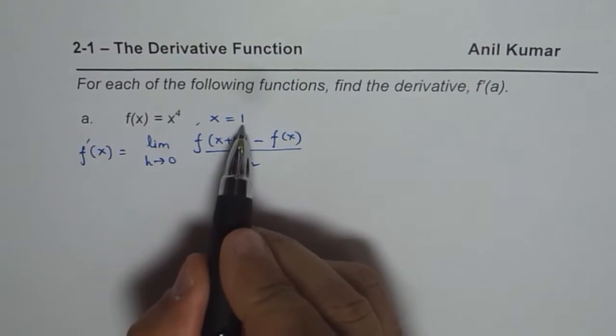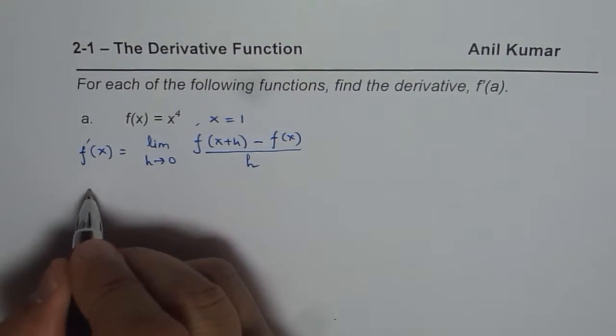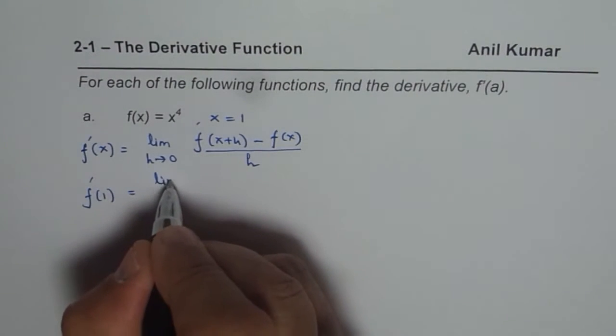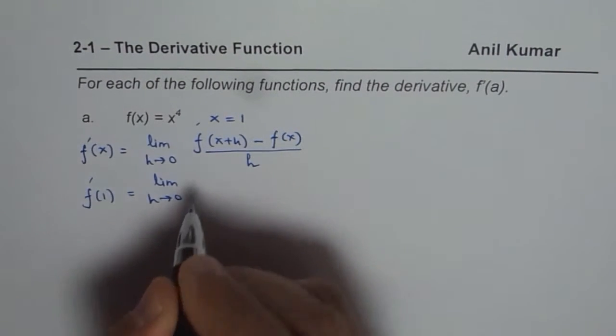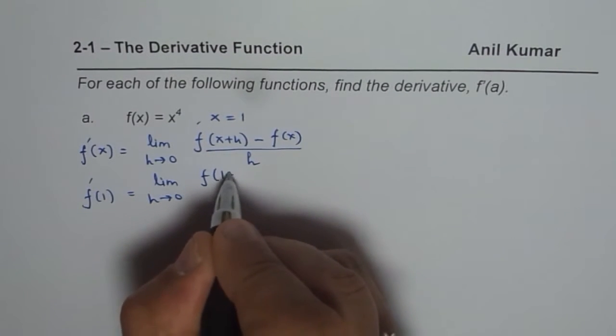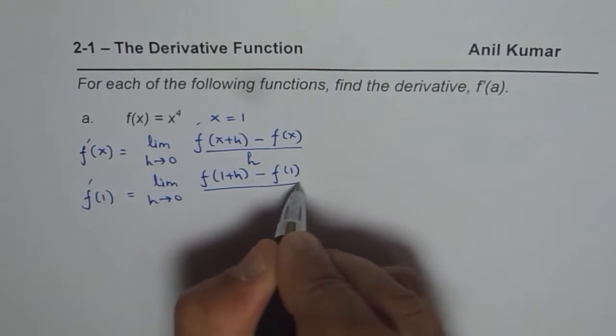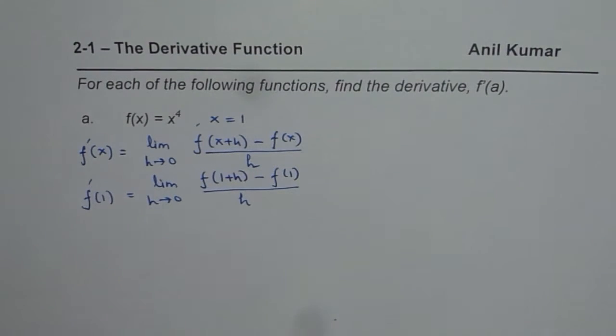Now when we are given a particular point, then the derivative at that point will be equals to limit h approaches 0, f(1+h) minus f(1) over h. So that is how we need to solve such questions.